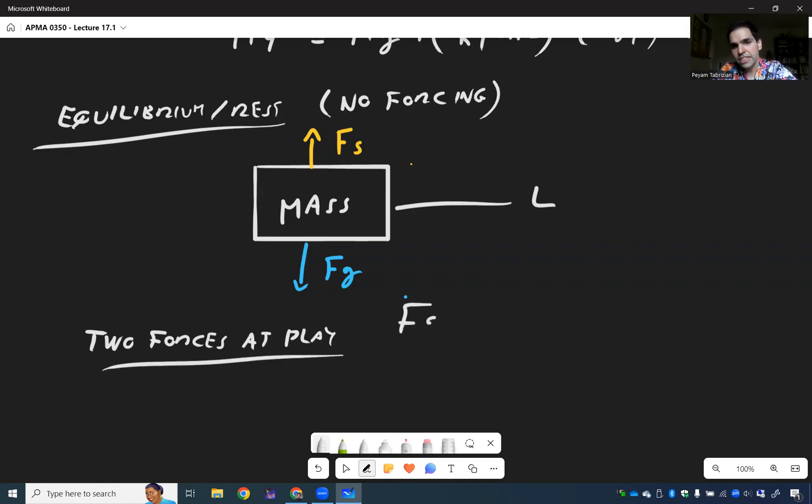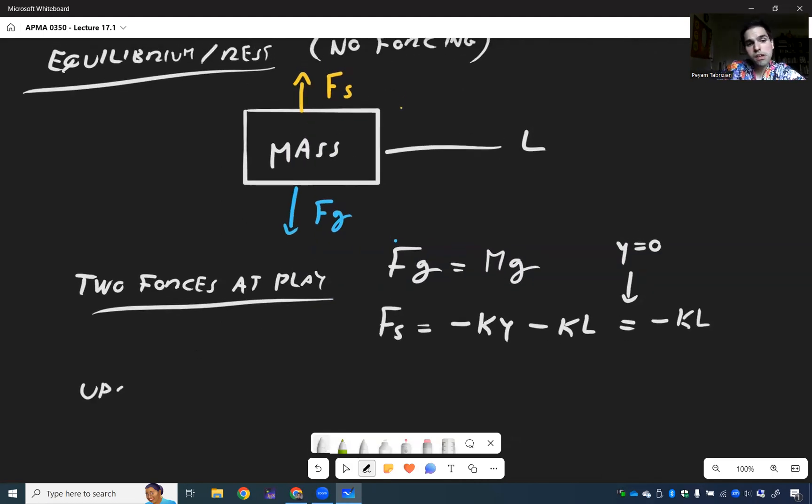Because there is no air resistance because it's not moving, and there is no forcing because we're not forcing anything. So two forces at play here. So again, there was gravity which is MG, and there's a spring force which I want to remind you is minus KL. But if you're at rest, then position is L, so there's no displacement and this simplifies to minus KL. And the whole point is at rest, those two forces balance out.